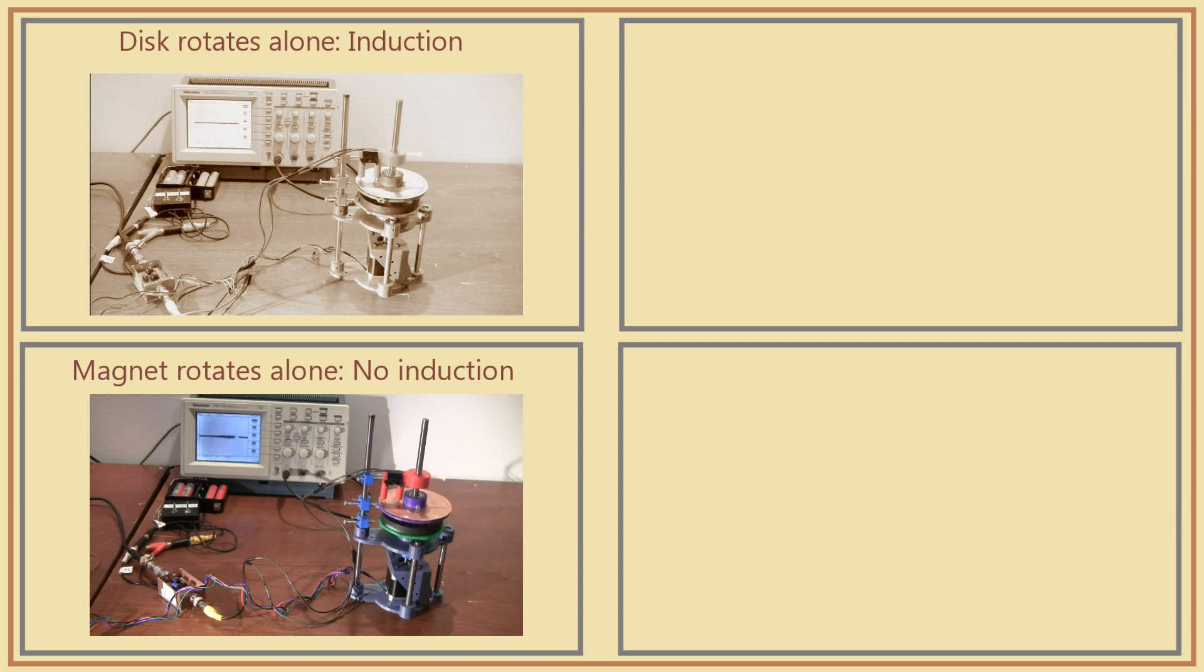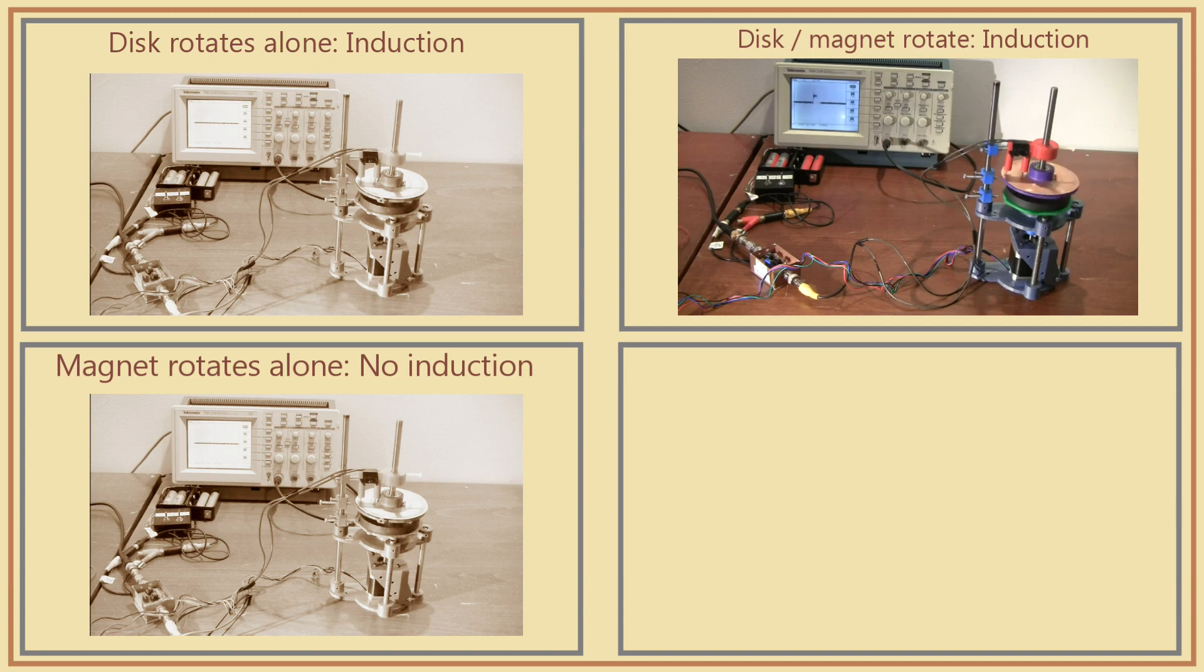Then in the second, we rotated the magnet alone. In the third scenario, we rotated the magnet and the disk together. And in the fourth, we rotated the stator alone.